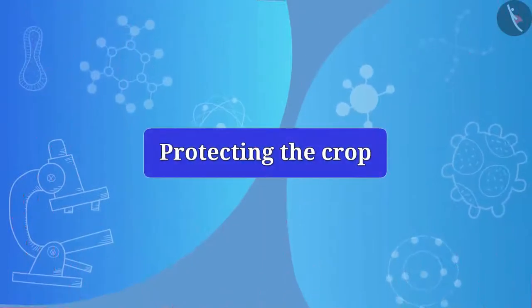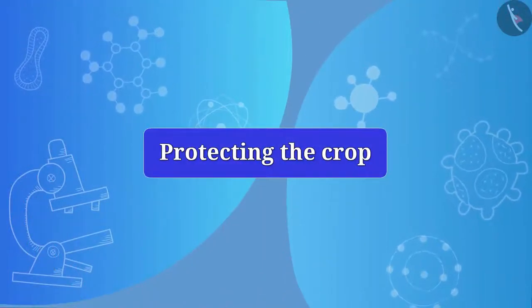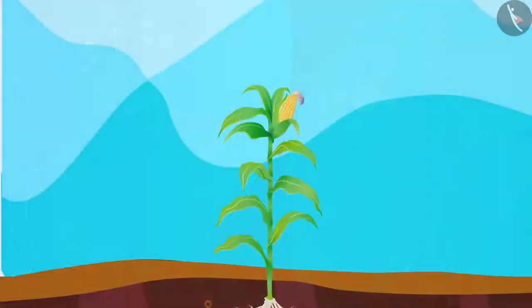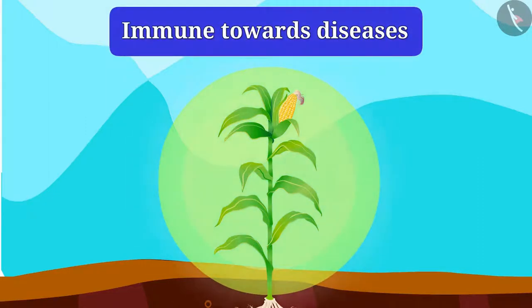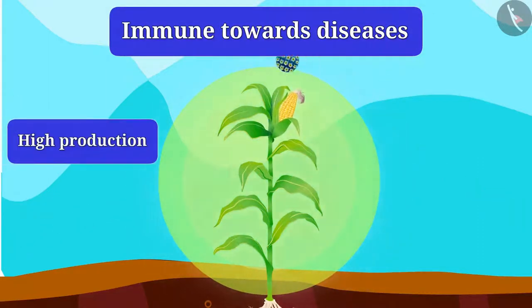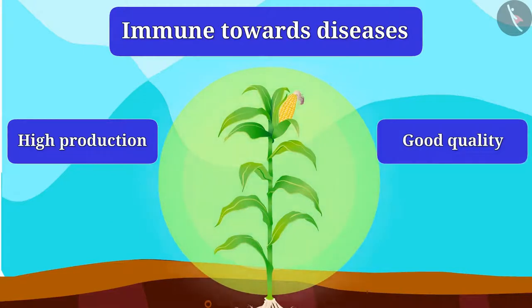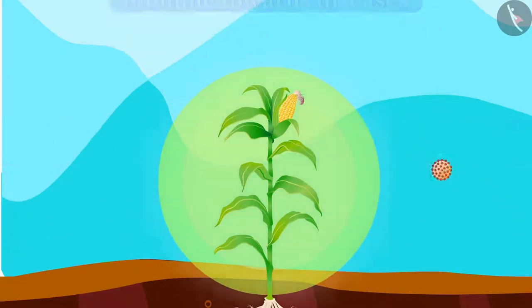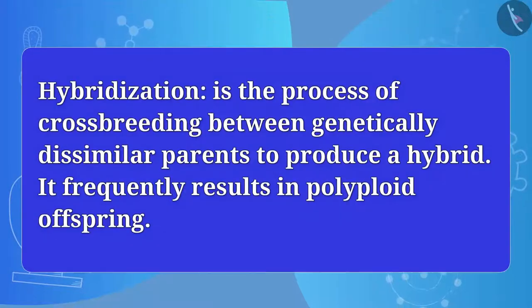Let's understand all these topics in detail. Do you know what is the identity of a good crop? The crop should be immune towards diseases, have high production, and be of good quality. One way to include all these desired features is hybridization.